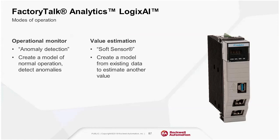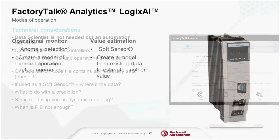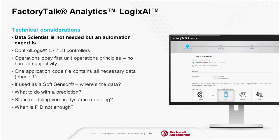There are essentially two modes of operation for Logix AI: anomaly detection and soft sensing. Anomaly detection is when Logix AI creates a model of normal operation and then tries to detect anomalies — for example, the module can help operators spot performance deviations in equipment like mixers that could affect product quality or lead to downtime. Soft sensing is when Logix AI creates a model using existing data to estimate another value — for example, predicting the humidity of a packaged food product by analyzing variables from line assets like sprayers, dryers, and burners, rather than an operator taking a manual reading.